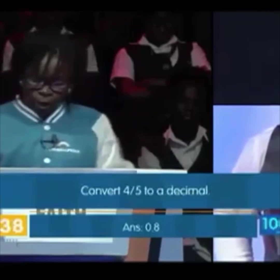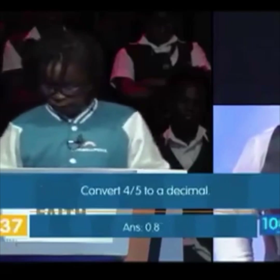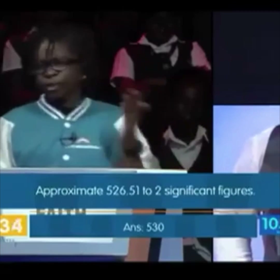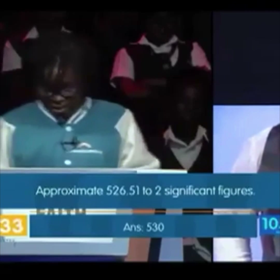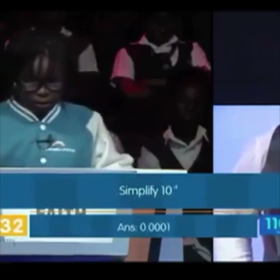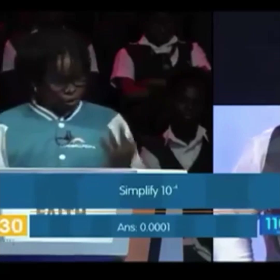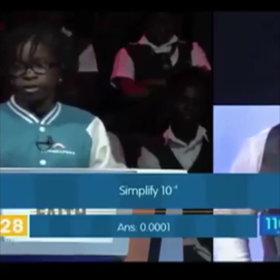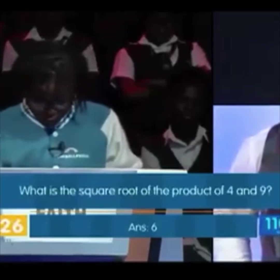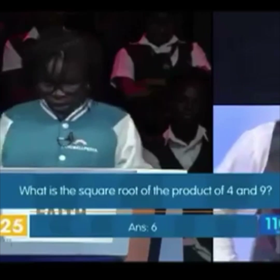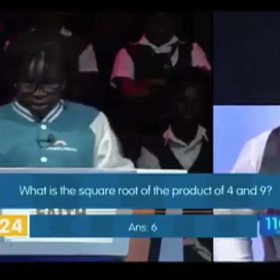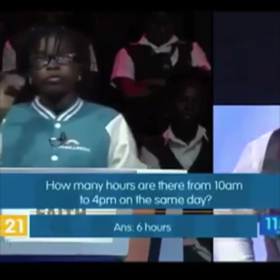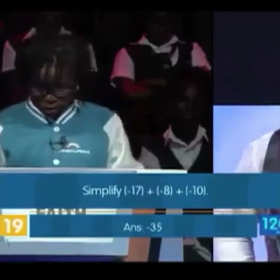Express zero point zero zero two. Point four times six by minus five. Correct. Convert four point eight. Correct. Approximate five to five — five point five, five hundred and thirty. Correct. Simplify terms for minus four: zero point zero zero zero zero one. Incorrect. What is the square root of the product of four and nine? Six. Correct. How many hours are there from 10 a.m. to 4 p.m. on the same day? Six. Correct.